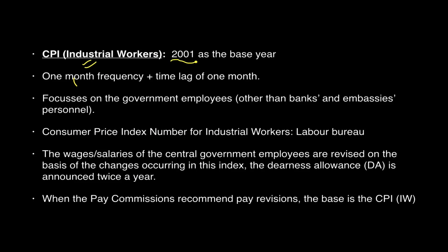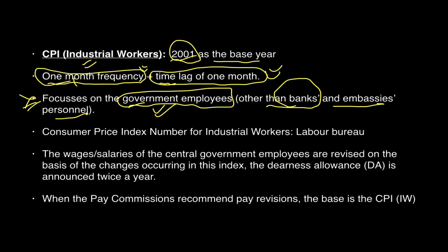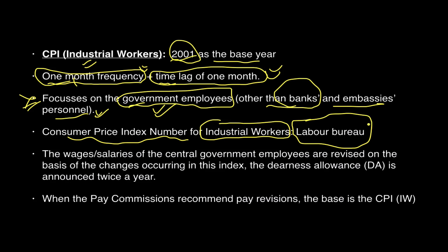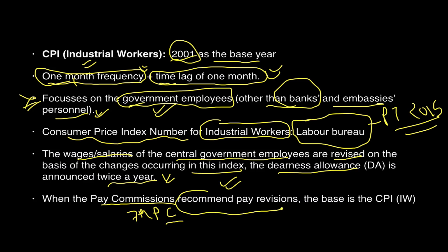CPI for Industrial Workers has 2001 as its base year, with monthly frequency and a one-month time lag. It mainly focuses on government employees and excludes bank employees and embassy personnel to avoid distorting the numbers. It is calculated by the Labour Bureau — this was asked in the UPSC CSE 2015 preliminary examination. Wages and salaries of central government employees are revised on the basis of this index, and Dearness Allowance is announced twice a year based on it.